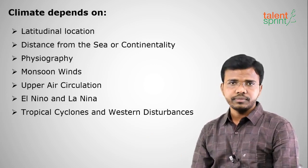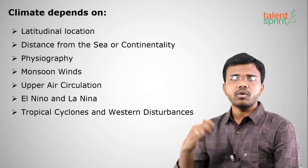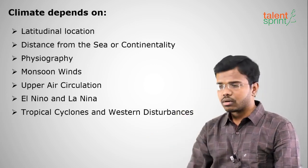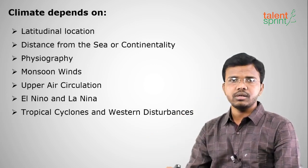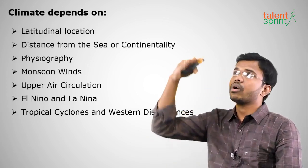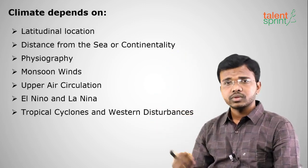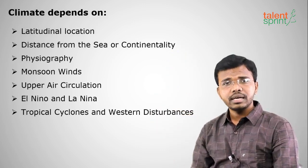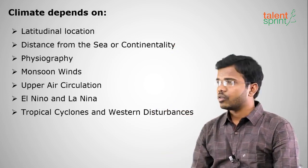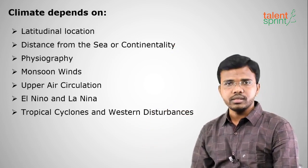The next factor is physiography — that means the terrain or land. If you are at mean sea level you will have higher temperature, but if you go up in elevation the temperature will decrease. You will have lesser temperature at higher altitudes. This is called physiography or terrain of the land.